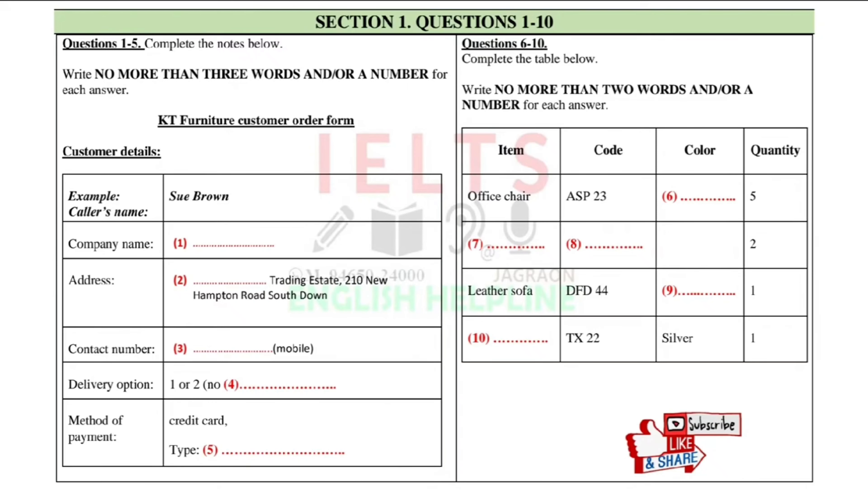I see. And where are you located? What's your postal address? Right. Well, we're on Kirby Trading Estate. Kirby. How do you spell that? It's K-I-R-B-Y. Oh, I know that area. It's New Hampton Road, isn't it? Yes, that's right. Number 210 in South Down. Okay.